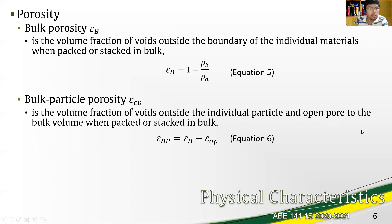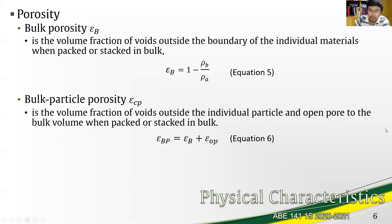Bulk porosity is the volume fraction of voids outside the boundary of the individual materials when packed or stacked in bulk. In equation, it is one minus the quantity of bulk density divided by apparent density. Bulk particle density is the volume fraction of voids outside the individual particle and open pores relative to the bulk volume when packed in bulk, expressed as the sum of bulk porosity and open pore porosity — equation six.